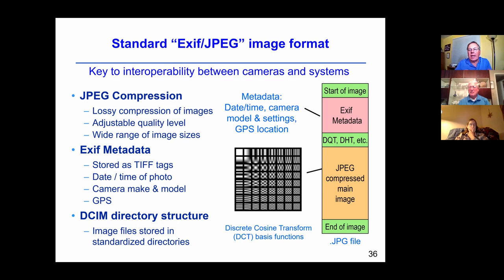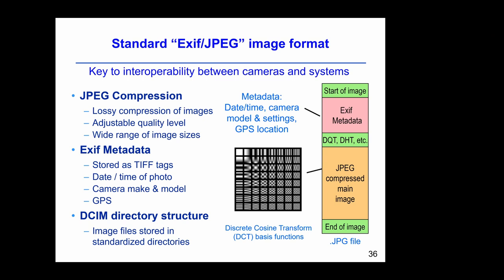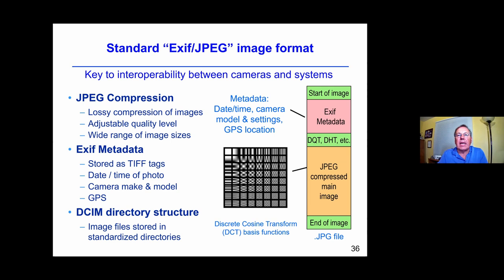The more important thing turned out to be the actual image format used to store the images. Because flash memory was expensive you needed to do compression. JPEG compression was developed and standardized in the early 1990s and is still used today almost 30 years later. As part of the JPEG format there's room at the beginning of the file to store metadata. We developed what's called EXIF metadata, which can store things like the date and time the picture was taken, the camera settings, and GPS where the images were taken. This EXIF JPEG format is still used today in smartphone cameras. There's also the DCIM file structure, which specifies how you name files and store them into directories.